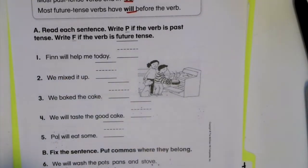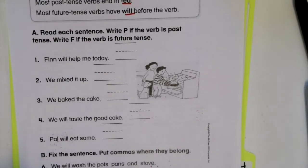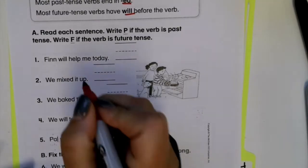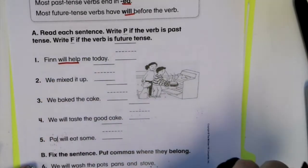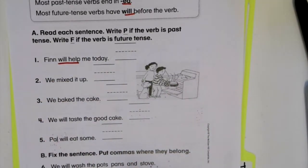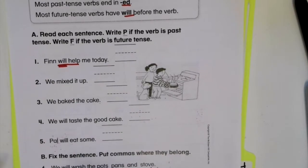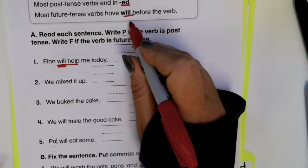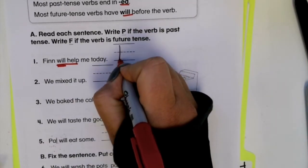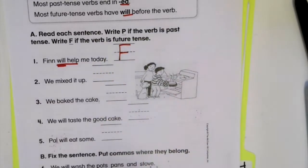Finn will help me today. Who is the sentence talking about? It's talking about Finn. What about Finn? Finn will help. I want you to underline our verbs. So will help. Is will help past tense or future tense? I heard and saw and underlined the word will, which helps me to know that it is future tense. I need to put a capital F in number one.